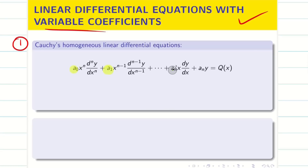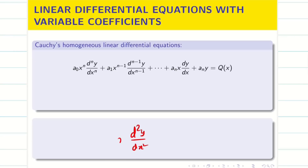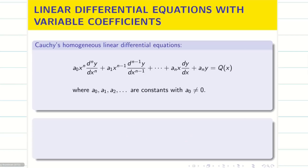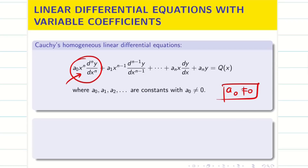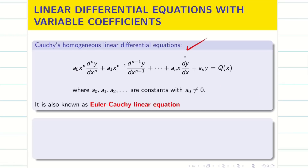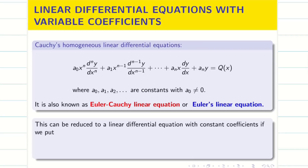Here a₀, a₁, a₂, etc., up to aₙ are constants. You can see that if you have d²y/dx² it should be multiplied with x². If you have dy/dx it should be multiplied with x — this is the variable coefficient. On the right hand side we always take it as Q(x). It is very important that a₀ should not be equal to 0; if a₀ equals 0 then the whole term becomes 0 and we cannot call it an nth order differential equation. This is also known as the Euler-Cauchy linear equation or Euler's linear equation.